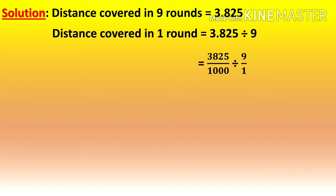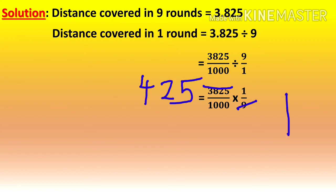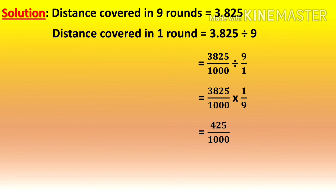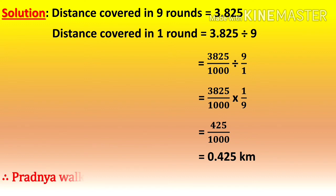The decimal number will convert into fraction. After the decimal there are 3 digits, so it becomes 3825 upon 1000, divided by 9 upon 1. 3825 upon 1000 divided converts into multiply; 9 upon 1 becomes reciprocal 1 upon 9. Calculating: 9×1=9, 9×4=36; remainder 2 gives 22; 9×2=18; remainder 4 gives 45; 9×5=45. So here we get 425 upon 1000. Converting to decimal: 425 already has 3 digits, so we put the decimal and add a leading zero: 0.425 km. Pratanya walks 0.425 km in 1 round.